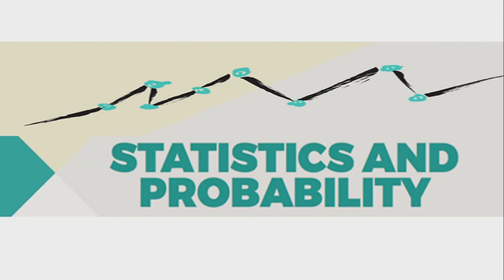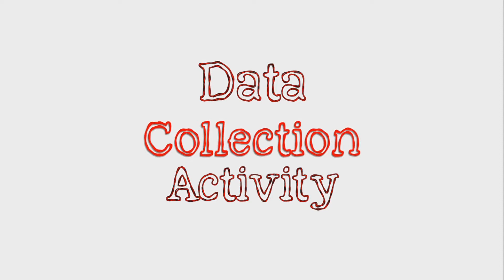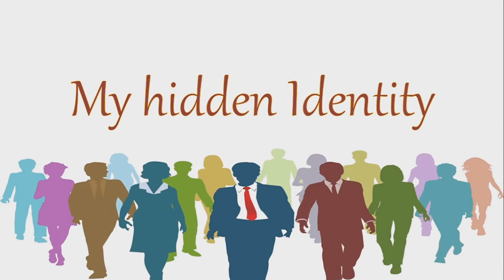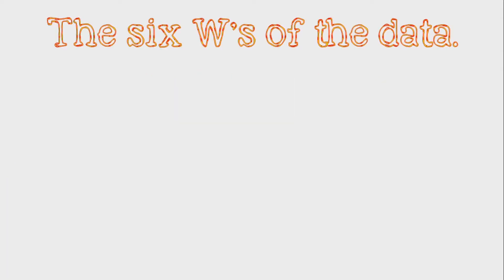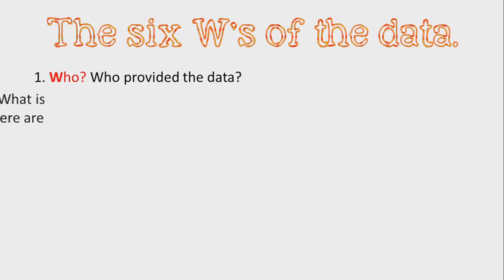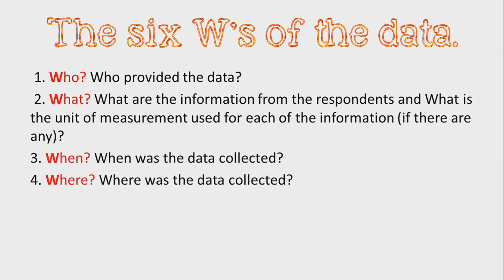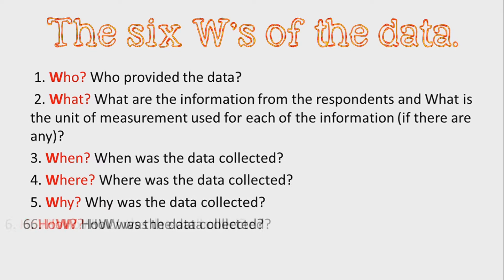Hey, what's up everyone! This is Teacher Dell and we are back with another lesson under statistics and probability. Last time we discussed about data collection activity. First, you need to remember to hide the identity of your respondents because of the law on confidentiality. We also talked about data and how to give meaning to data — you need to answer who, what, when, where, why, and how: the six W's of the data.